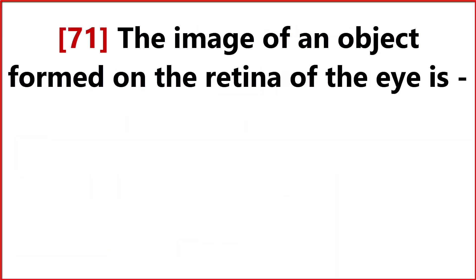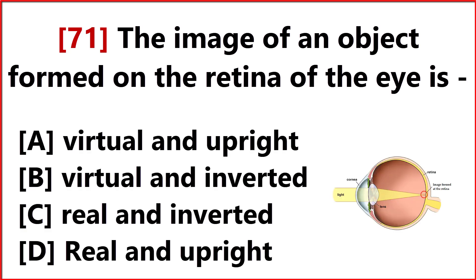The image of an object formed on the retina of the eye is? Option C. Real and inverted.